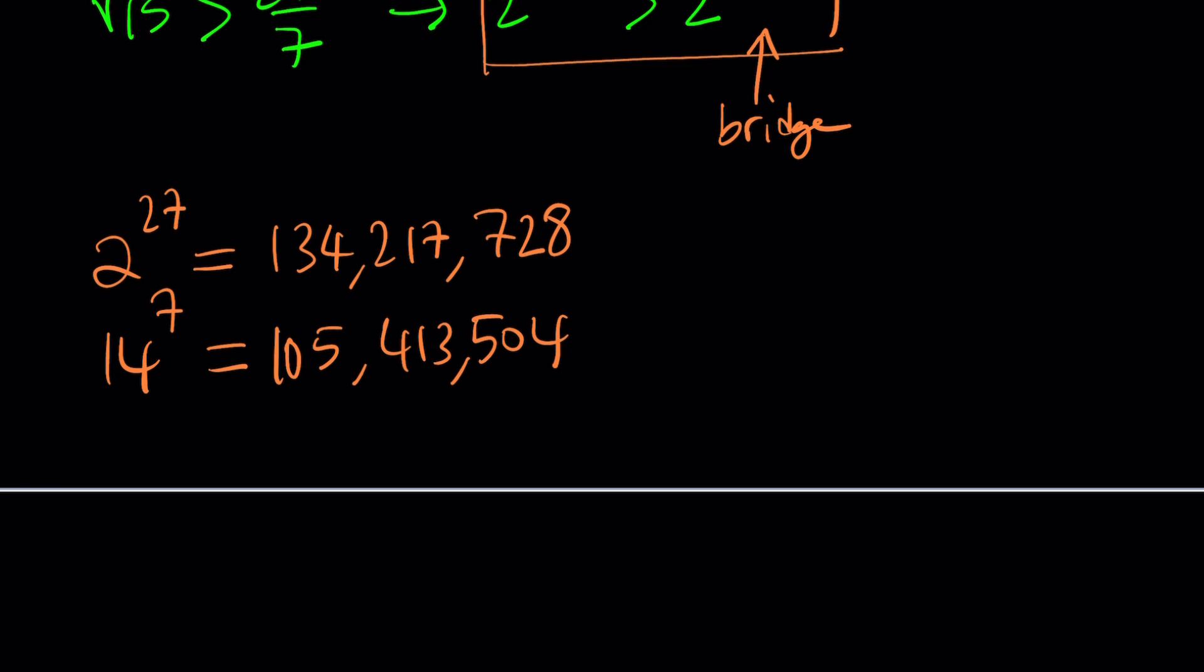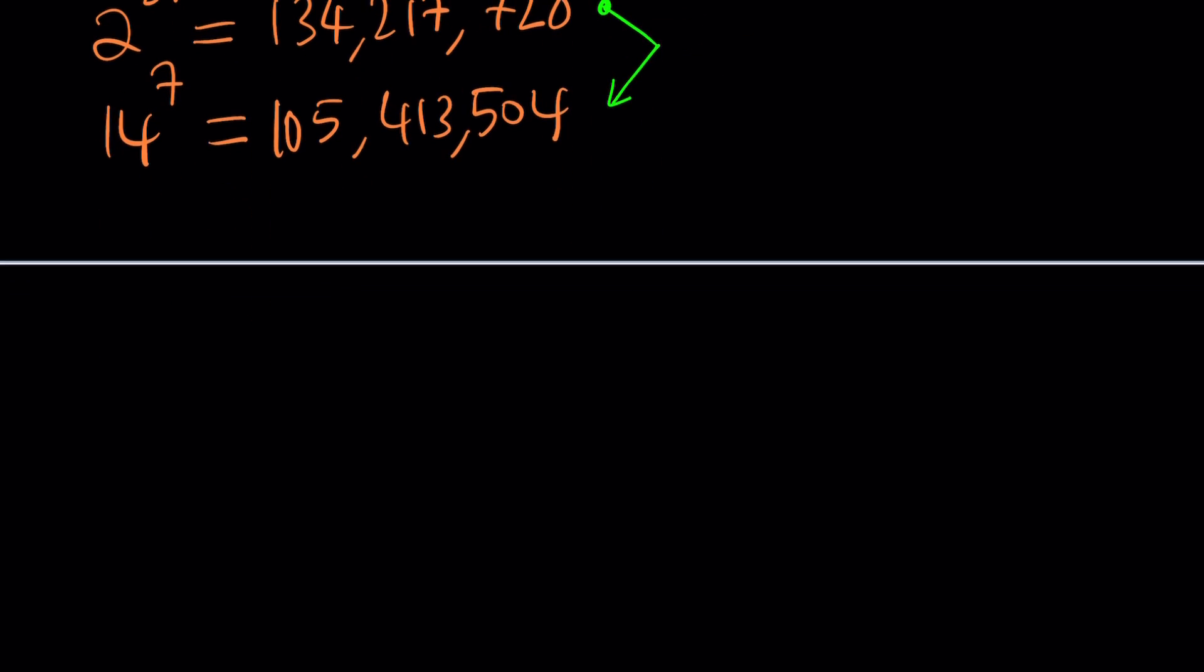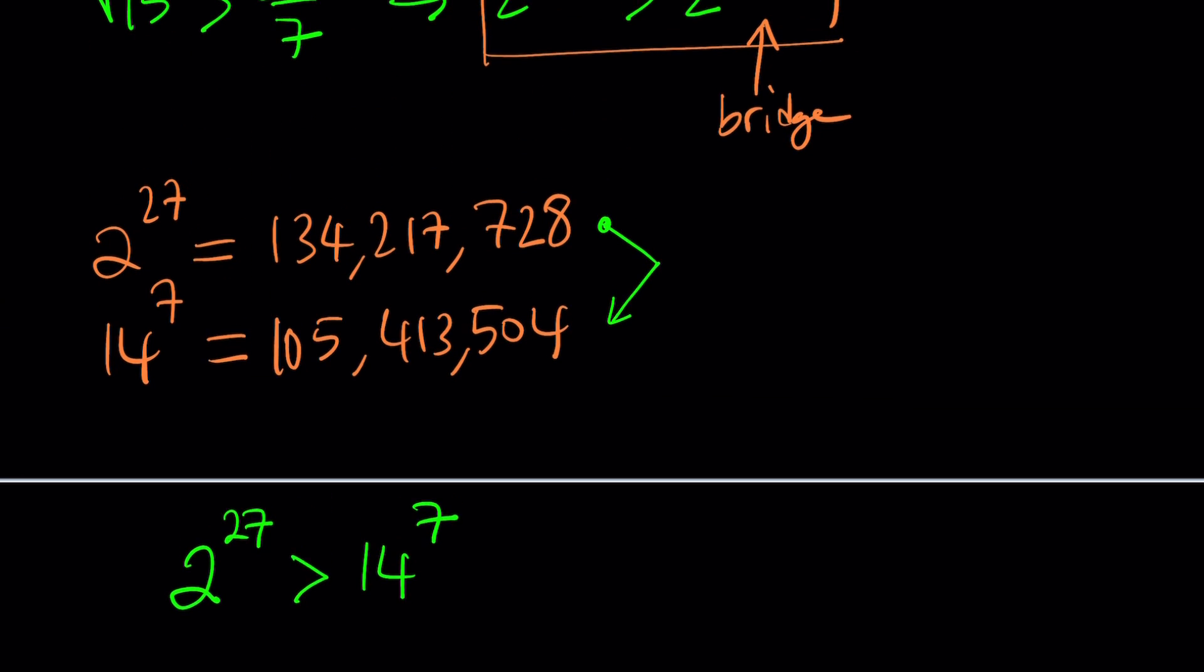But how do we use them? Here's the thing. We now know that the top number, 2 to the power 27 is greater than 14 to the power 7, correct? Let's go ahead and write it down. 2 to the power 27 is greater than 14 to the power 7. Awesome. But how do you use that?